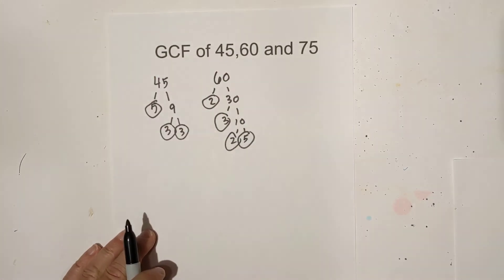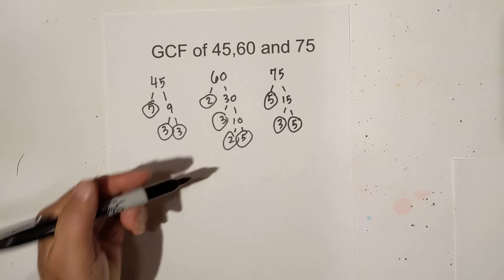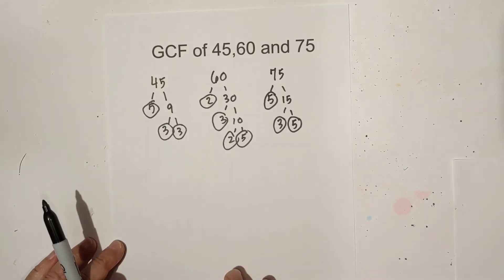So we're now down to prime numbers for 60 and all we have left is 75. And just to speed things up I just went ahead and created a factor tree for 75.